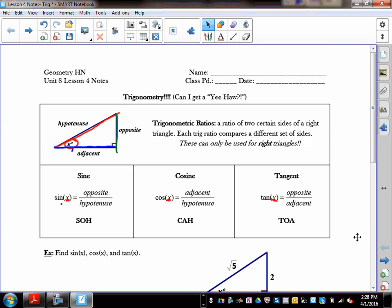So sine of x is the ratio of the opposite side and the hypotenuse. Cosine of x is the ratio of the adjacent side to the hypotenuse. And tangent is the ratio of the opposite side to the adjacent side. So again, it's taking those two values, putting a fraction of one, and reducing it.